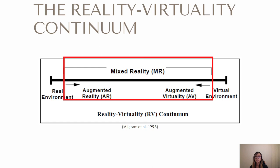The difference between AR and AV is that the former refers to the incorporation of virtual objects into a real environment, whereas AV is reserved for the inclusion of real objects into a virtual environment.